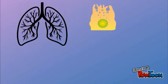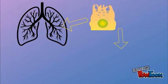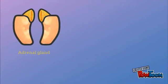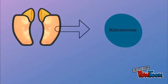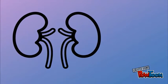ACE is found in the endothelial cells of the capillaries throughout the body, within the lungs, and epithelial cells of the kidney. Angiotensin 2 is a potent vasoactive peptide that causes arterioles to contract. Angiotensin 2 also stimulates the secretion of the hormone aldosterone from the adrenal cortex.